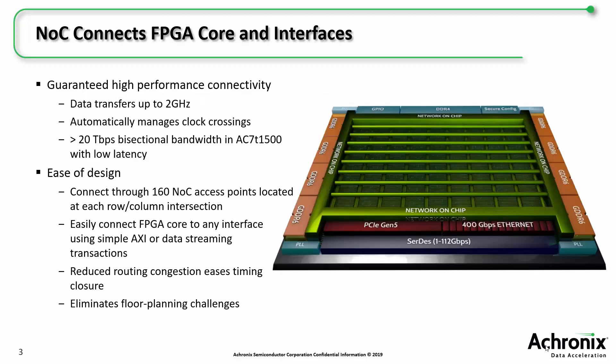As you know, the NOC in the Speedster 7T gives you guaranteed high performance. With data transfers at up to 2 gigahertz, the NOC provides over 20 terabytes of bisectional bandwidth in the AC701500 device. It can also make your design easier. With 160 NOC access points or NAPs, you can easily connect any of our interface subsystems to the fabric using simple AXI or data streaming transactions.